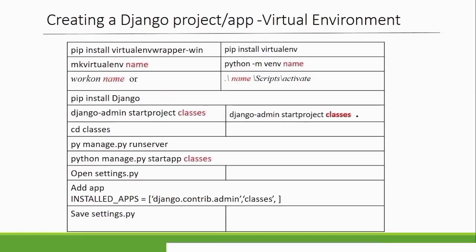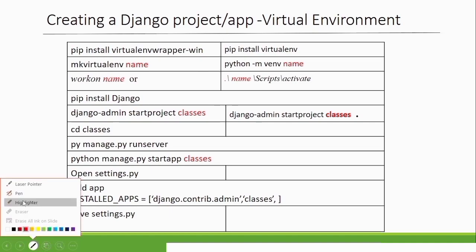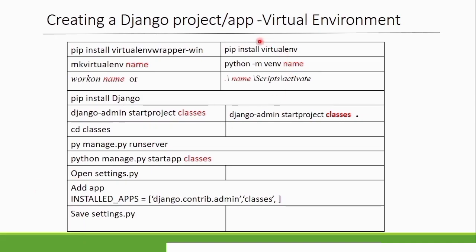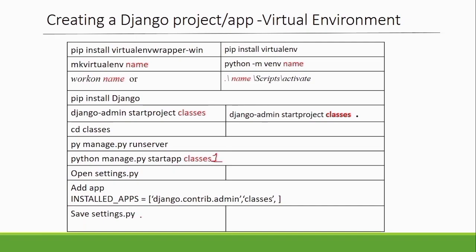Today we've seen how to create applications within a Django project. The steps are: create a virtual environment, activate it, install Django, create a project, run it to verify it's working, then create your applications. Remember — the application name should be different from the project name. Add it to `settings.py`, save the file, and you're good to go.